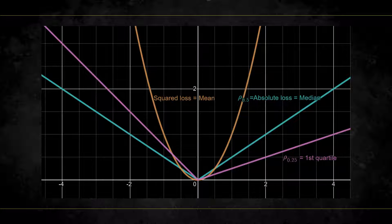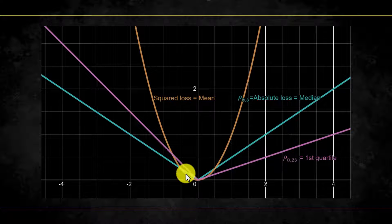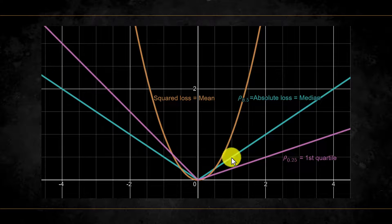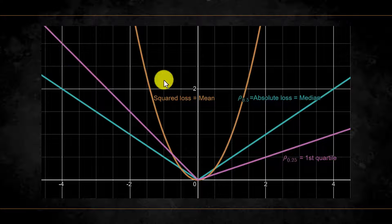Here again is a recap of some different loss functions. The squared loss of the mean, the absolute loss of the median, and the quantile loss here for the first quartile.